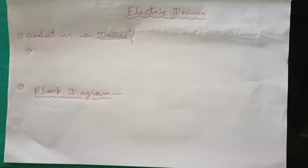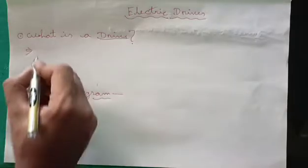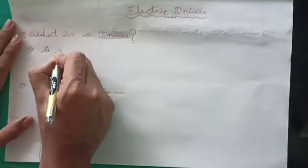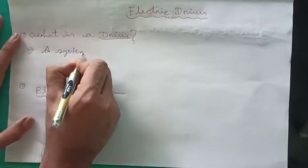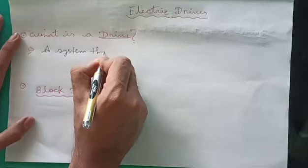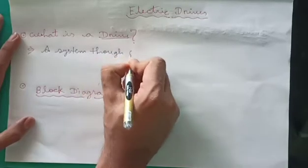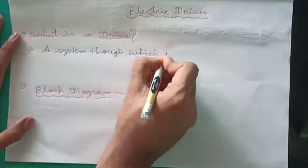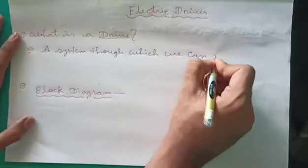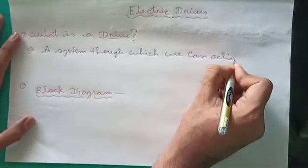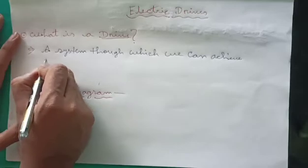The system through which this motion control is achieved is known as drives. So what is a drive? A system through which you can achieve motion control.